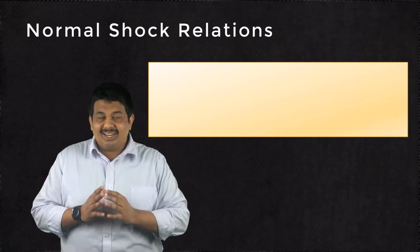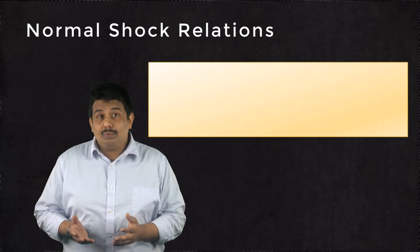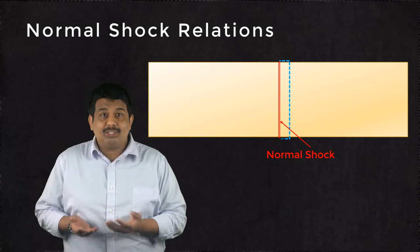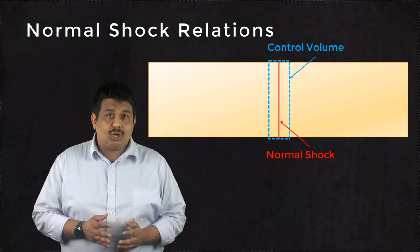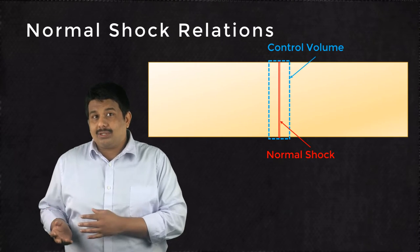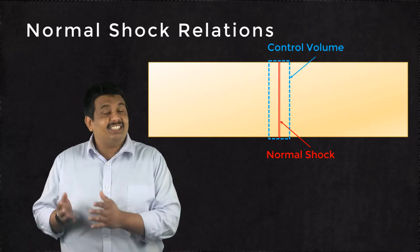To obtain mathematical relationships, we assume a control volume around the shock wave. For the purpose of this analysis, we assume the shock to be an infinitely thin discontinuity across which the flow properties sharply vary.